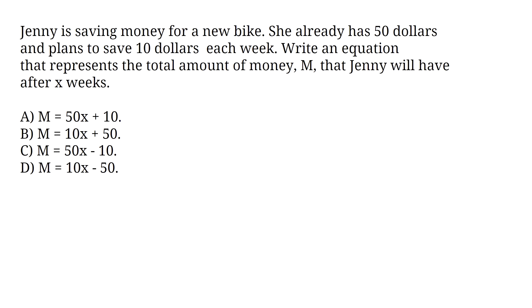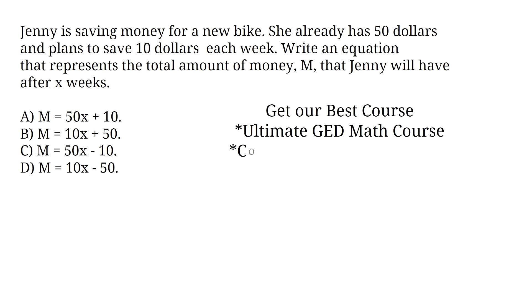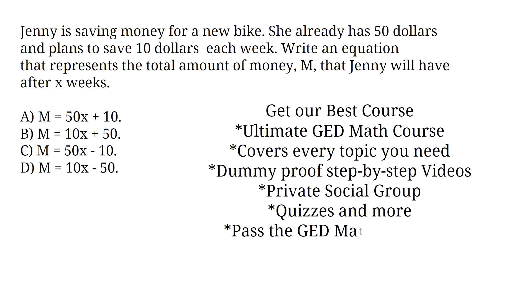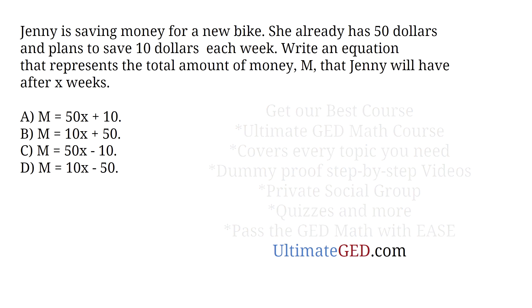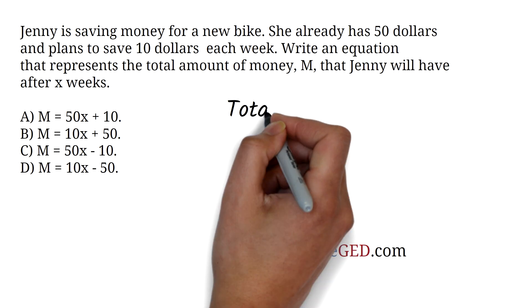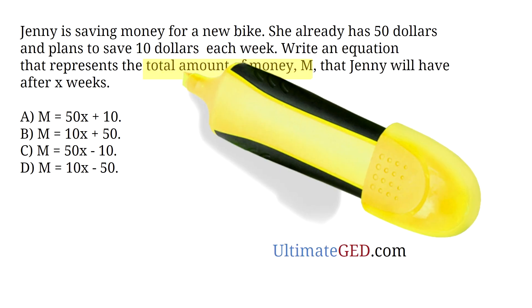Jenny is saving money for a new bike. She already has $50 and plans to save $10 each week. Write an equation that represents the total amount of money M that Jenny will have after x weeks. A. M equals 50x plus 10. B. M equals 10x plus 50. C. M equals 50x minus 10. D. M equals 10x minus 50. This is a two-step equation that is very common on the GED. For this question, there are three parts. The total — we have been told it is M, so we have M equals.